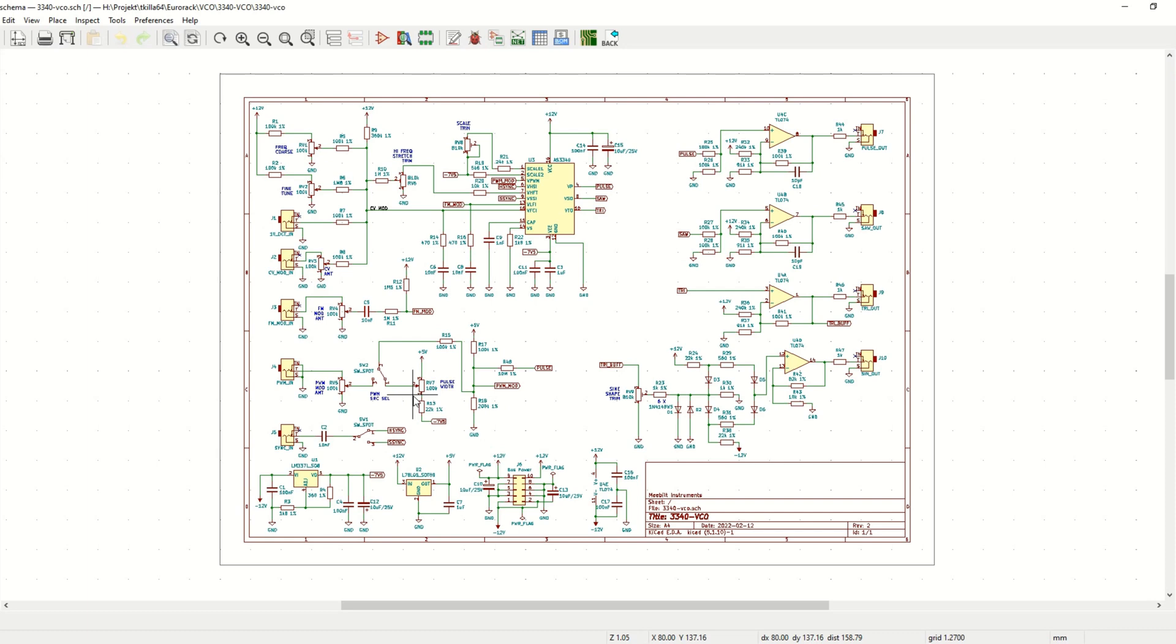If we look at the output section here, this is basically stolen directly from Casotronix design, because the thing with 3340 is that the outputs here they have a DC offset, and there are two ways to get rid of that. One is to have a DC blocking capacitor in this path, but that will have some negative effects on the square output, the pulse output here. So you will not have a perfect square wave out if you do that. So I think this solution is much better where you basically are subtracting the offset in the op amps.